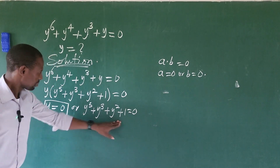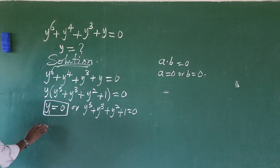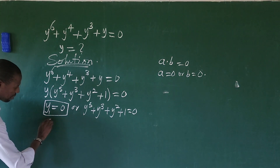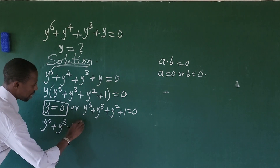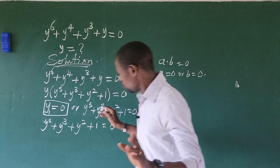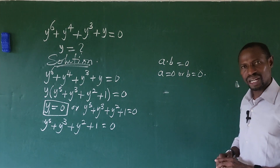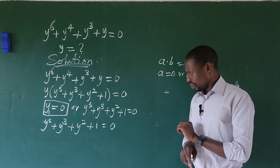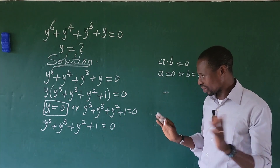Now let's solve the other side of the equation — a fifth-degree equation. We have y to the power of 5 plus y to the power of 3 plus y to the power of 2 plus 1 equal to 0. We don't want to use trial and error method here. But look at what I observed: a very nice expression is playing out here.